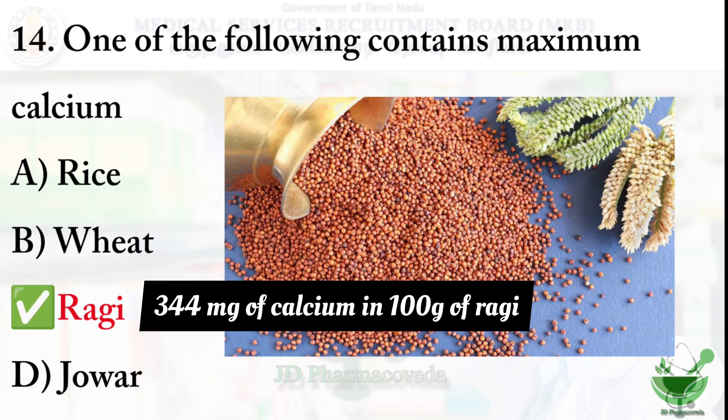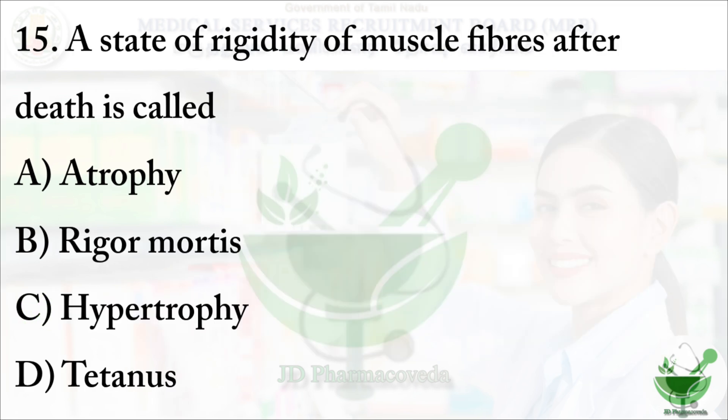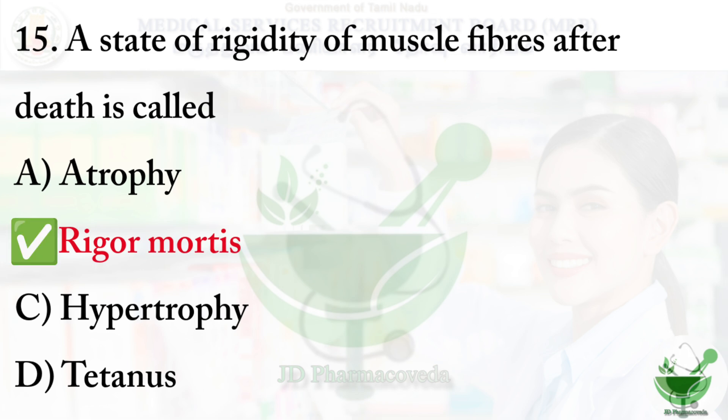Question number 15: A state of rigidity of muscle fibers after death is called — A) Atrophy, B) Rigor mortis, C) Hypertrophy, D) Tetanus. The correct option is B — Rigor mortis, also known as postmortem rigidity. It is a chemical change in the muscles that causes the body to stiffen after death.